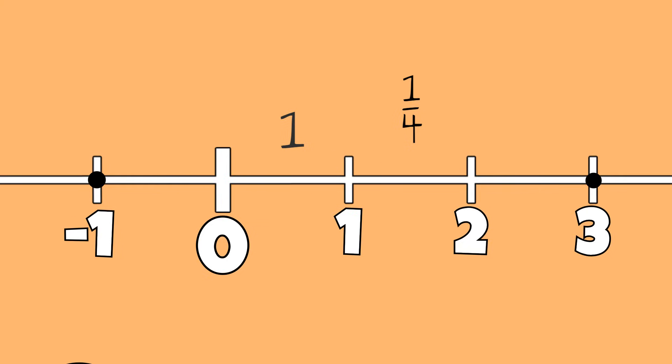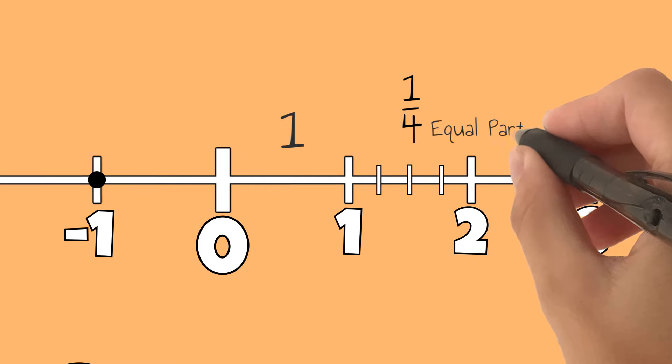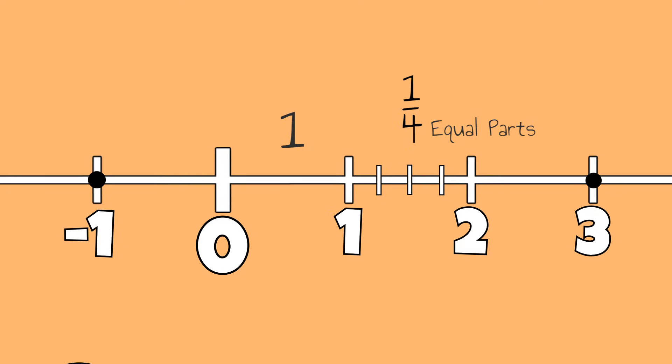If we look at the denominator in the fraction 1 fourth, this tells us that the whole between 1 and 2 needs to be divided into four equal parts. The equal parts are not represented by the lines, but rather by the spaces between the lines.